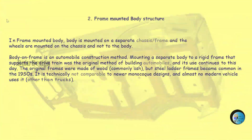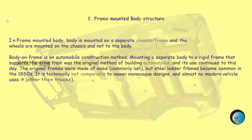Frame mounted body structure: The body is mounted on a separate chassis or frame, and the wheels are mounted on the chassis, not the body. Body on frame is an automobile construction method - mounting a separate body to a rigid frame that supports the drivetrain was the original method of building automobiles. The original frames were made of wood, commonly ash, but steel ladder frames became common in the 1930s. It is technically not comparable to newer monocoque designs and almost no modern vehicle uses it other than trucks.